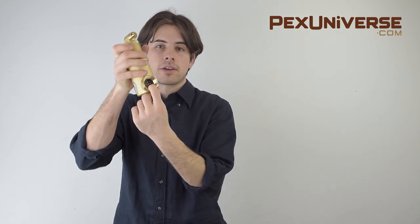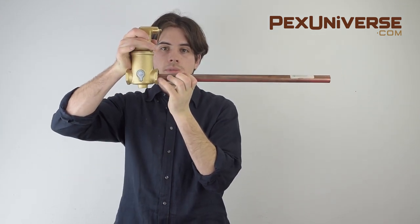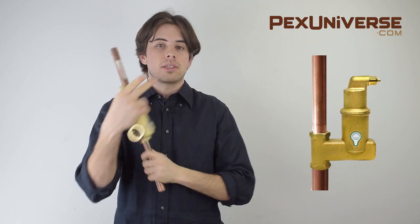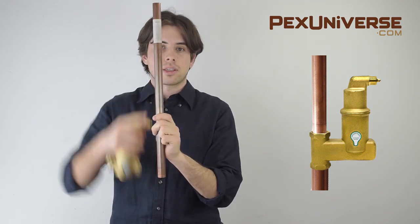Air eliminators and air separators can come with the connection options of sweat, threaded, and pressed connections. This here is a threaded connection as you can see by the inner grooves and most air eliminators are installed horizontally like this where the pipe just goes in simply like that. But as you can see here there are air eliminators that are installed vertically where the pipe runs like this.